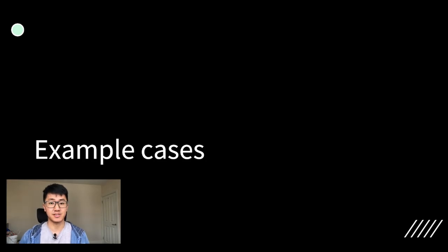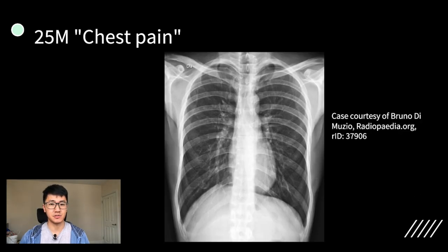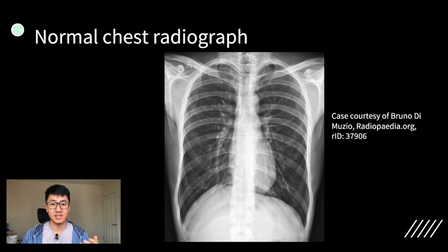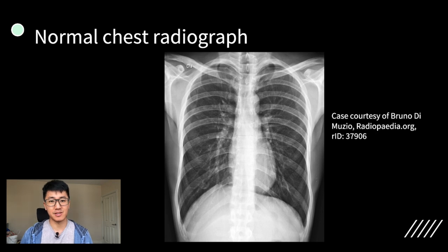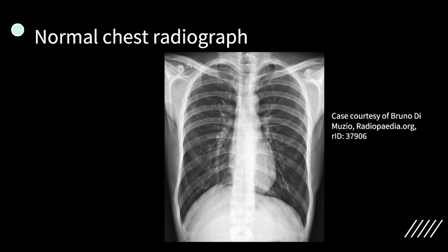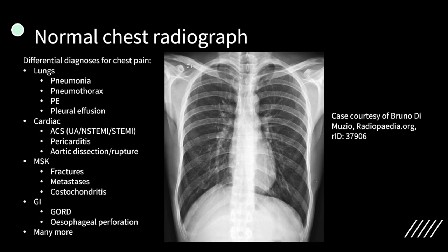Now let's go through some example cases. Firstly, we have a 25-year-old male with chest pain. Pause the video and try to work out what the diagnosis is. This is essentially a normal chest x-ray. It's really important to get familiar with what normal looks like before you start looking at pathology. The other important thing is that chest x-rays are often requested for chest pain, so it's really important to keep a broad differential diagnosis of all the various causes of chest pain, a few of which are up on the screen now.